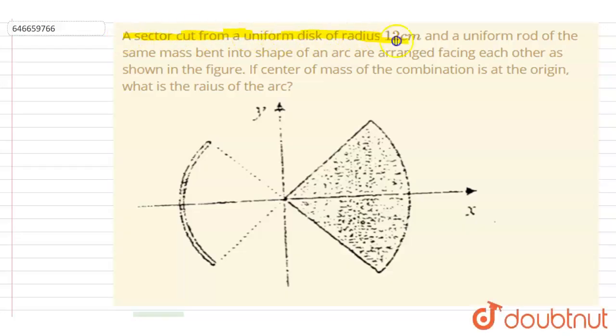A sector cut from a uniform disc of radius 12 centimeter and a uniform rod of the same mass bent into the shape of an arc, you can see in the figure, facing each other as shown in the figure.